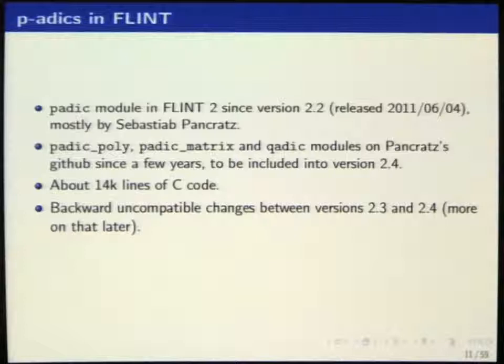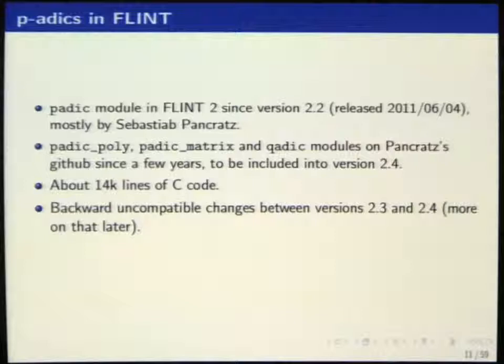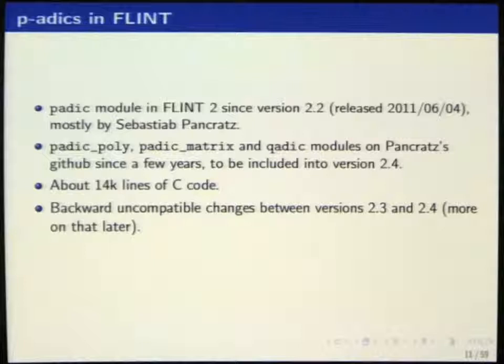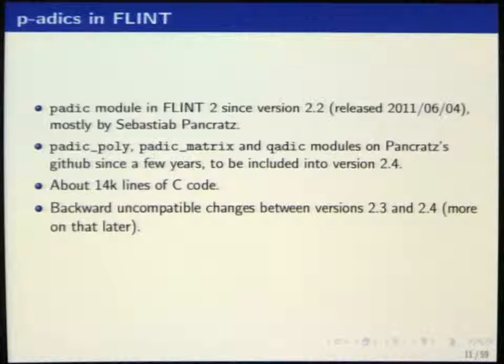For p-adics in Flint: Sébastien Pankhurst developed a p-adic module as well as polynomials over these, matrices, and unramified extensions. The p-adic and unramified modules have been integrated into version 2.2, released three years ago, and the other modules should make it into version 2.4. The p-adic code is about 10,000 lines — maybe 10% of all of Flint. Note that versions 2.3 and 2.4 are incompatible, so you shouldn't write anything based on 2.3.